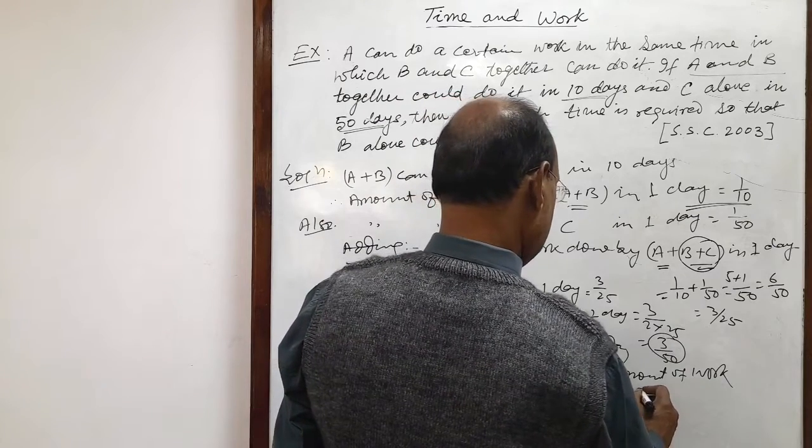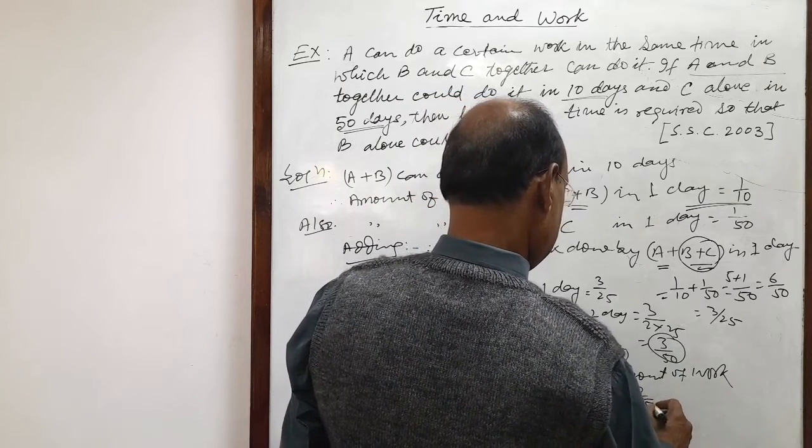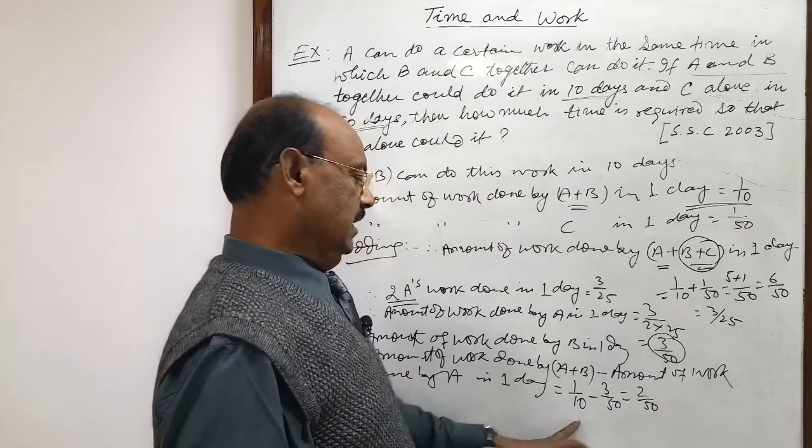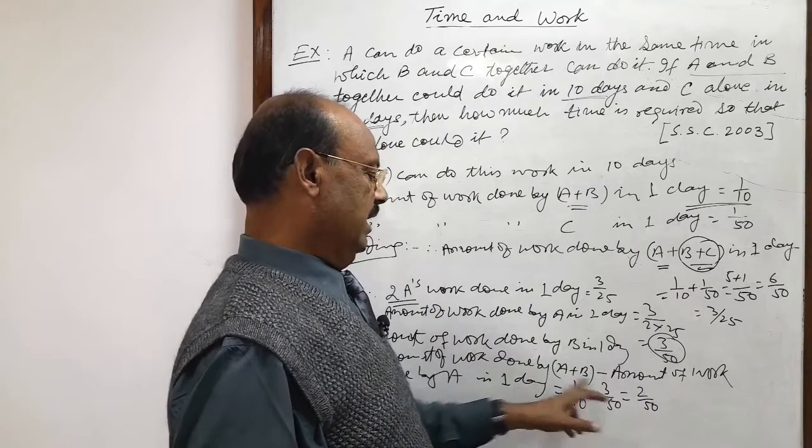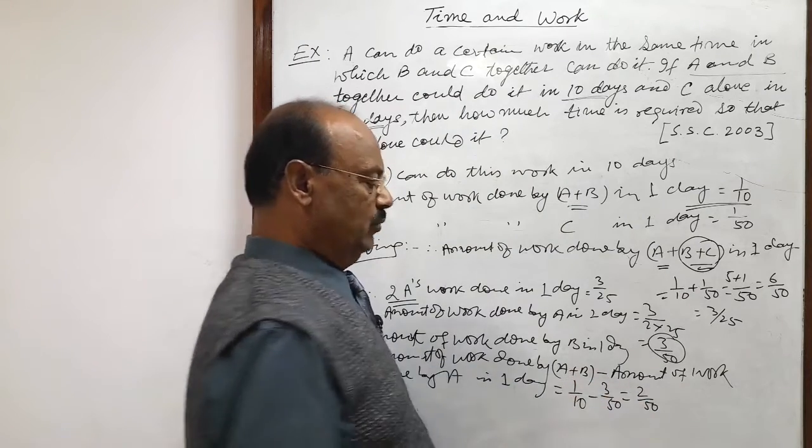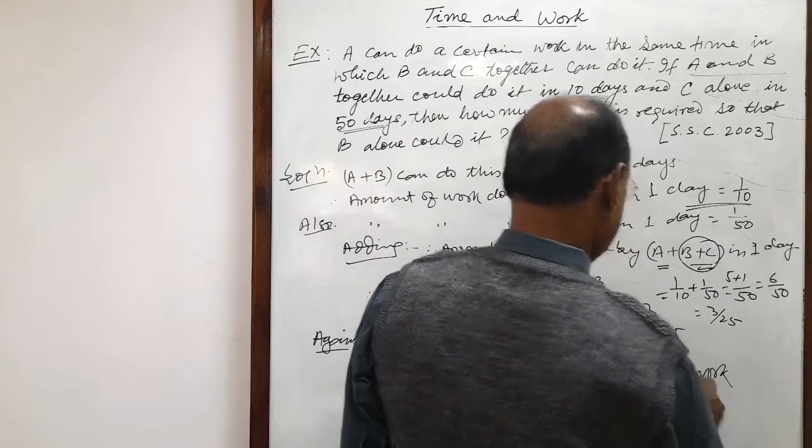So this will be how much? 2 by 50, taking LCM will be 50. So 10 fives equal to 50, 5 minus 3 that is 2 by 50, this is equal to 1 by 25.